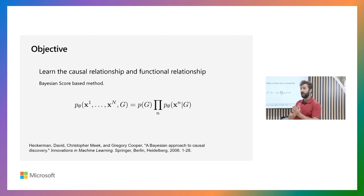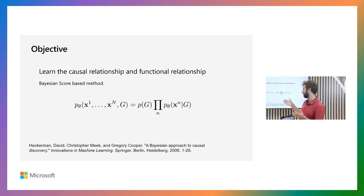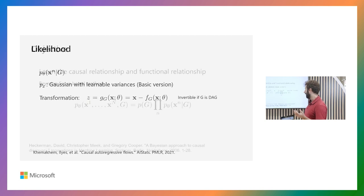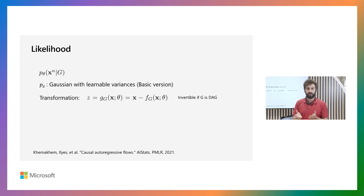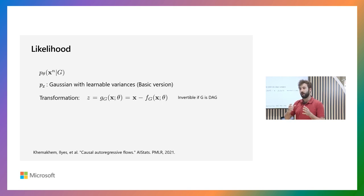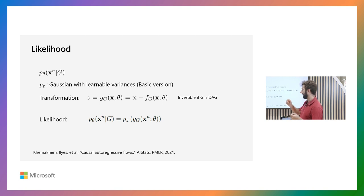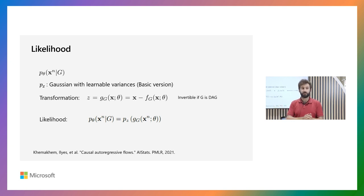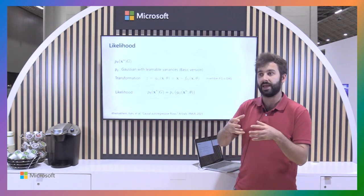What we then try to learn is a latent variable model where we have some distribution over our graph and distribution over our variables that factorizes accordingly. We simply optimize the likelihood of the observed data — using a Gaussian likelihood in the simplest case, but we have more complicated approaches using spline distributions as well. Because we use the additive noise model assumption, we can transform our observational data into the exogenous noise space — you can think of it as a simple normalizing flow where you invert your transformation back into the noise space and calculate your likelihood there rather than on the observational data. This allows us to learn the functional relationships end to end.